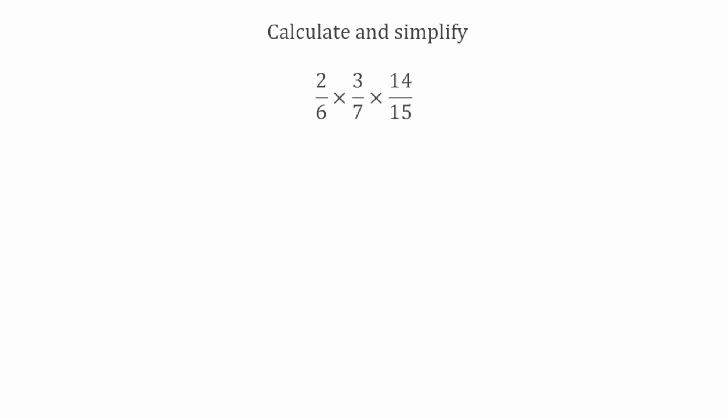For this last question, we've got three fractions being multiplied together. We're going to do this the same way — first simplify the individual fractions, then cross-cancel. Looking at the individual fractions: we've got 2 over 6, which we can simplify by dividing top and bottom by 2. 2 divided by 2 gives 1, and 6 divided by 2 gives 3, so 2 sixths is equivalent to a third. 3 over 7 is in its simplest form, and 14 over 15 is also in its simplest form.